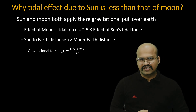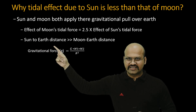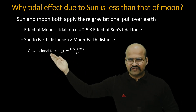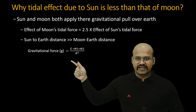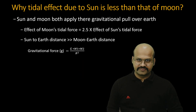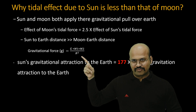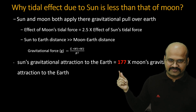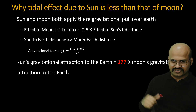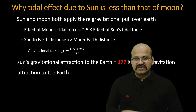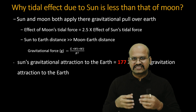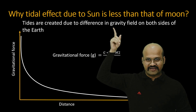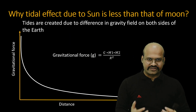The major reason taught in textbooks is that the sun-to-earth distance is much greater than the distance between the moon and earth. The gravitational force equation has distance squared in the denominator. But even with this formula, the sun's gravitational attraction to earth is actually 177 times the moon's gravitational force on earth. The real reason is that tides are created due to the difference in the gravity field on both — opposite — sides of the earth.